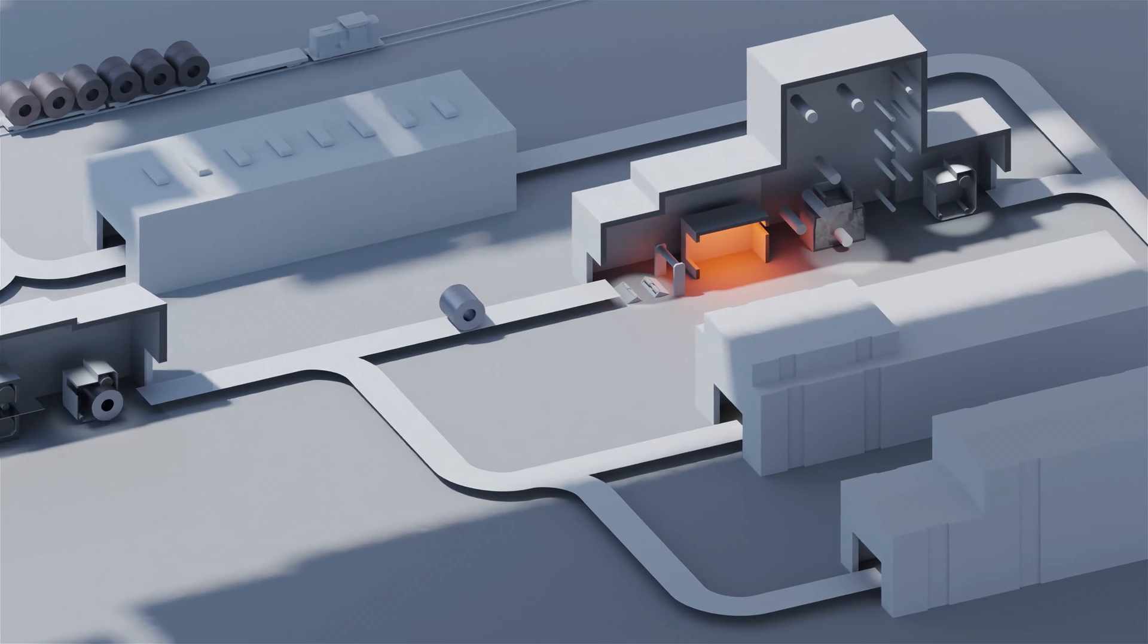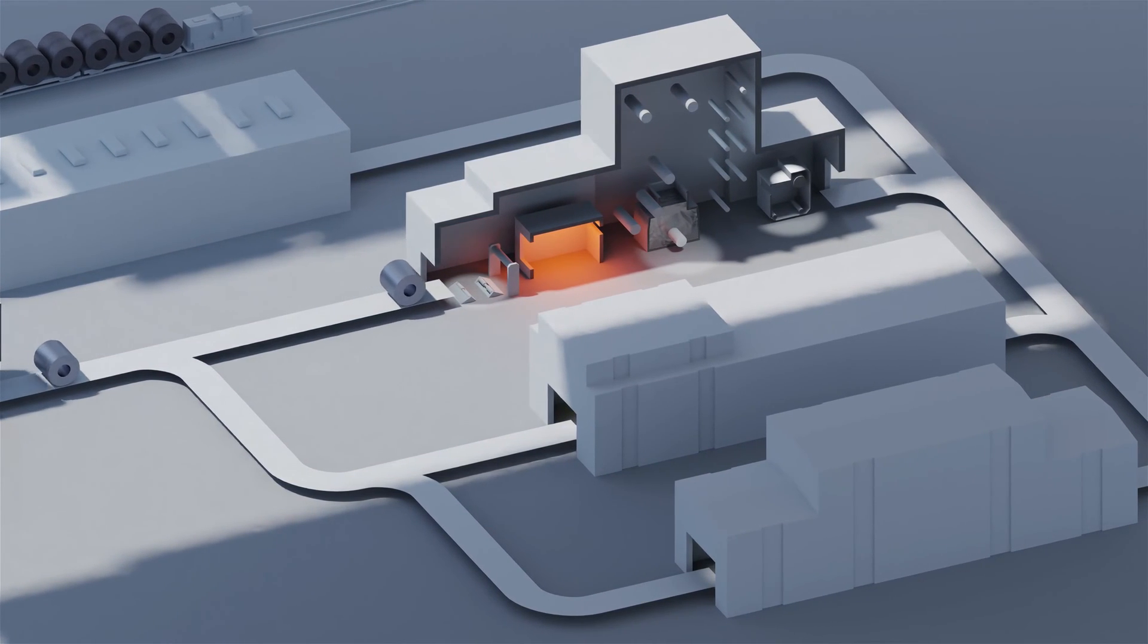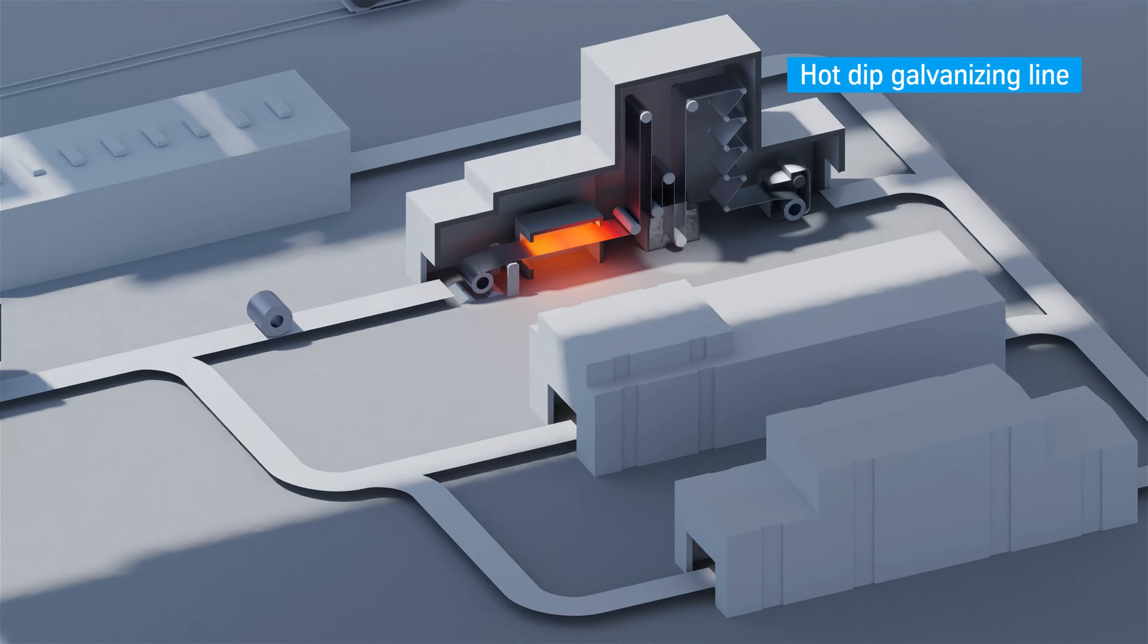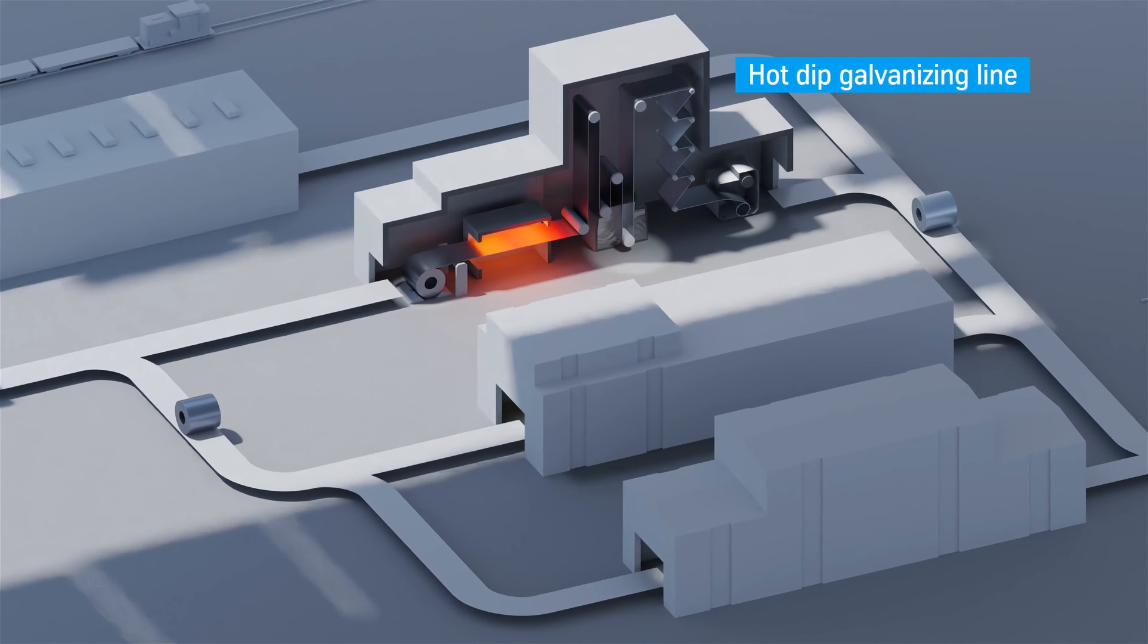Subsequent hot-dip galvanizing protects against corrosion, which is particularly important for car makers. In the hot-dip galvanizing line, the steel strip is heated and immersed in a bath of liquid zinc. The protective zinc bonds permanently with the steel on the surface.